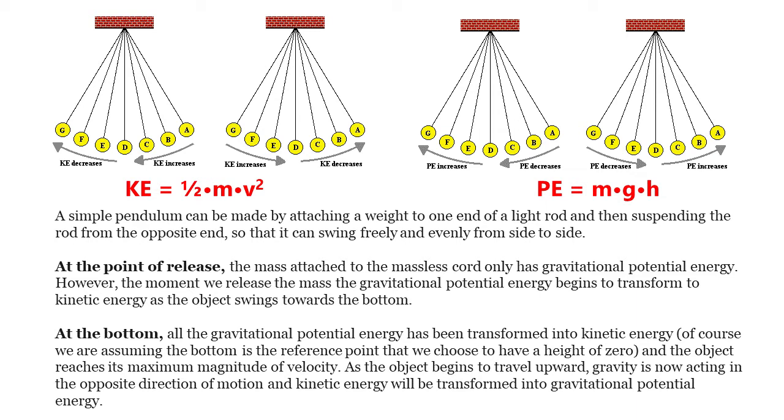the mass attached to the massless cord only has gravitational potential energy. However, the moment we release the mass, the gravitational potential energy begins to transfer to kinetic energy as the object swings toward the bottom.